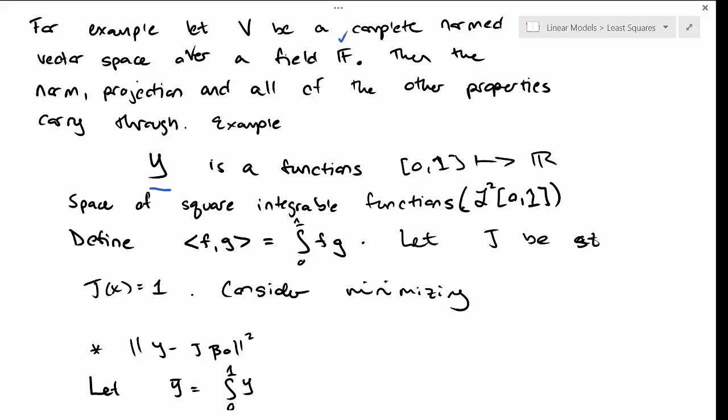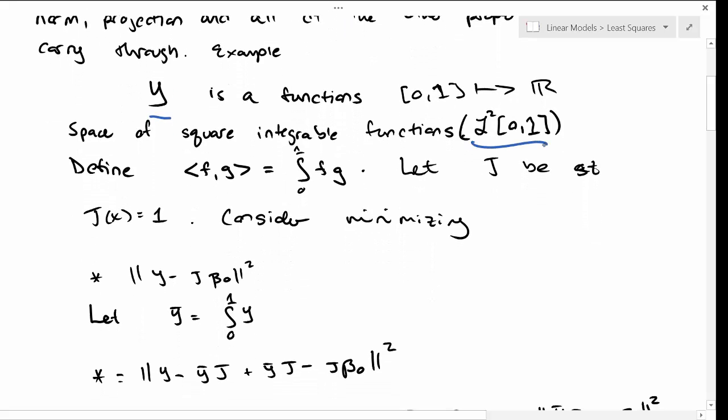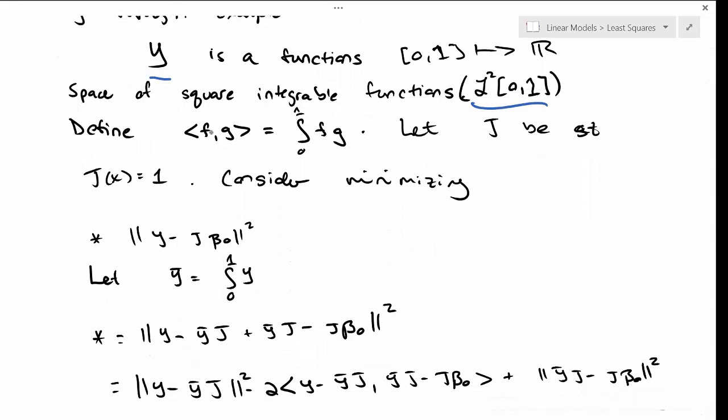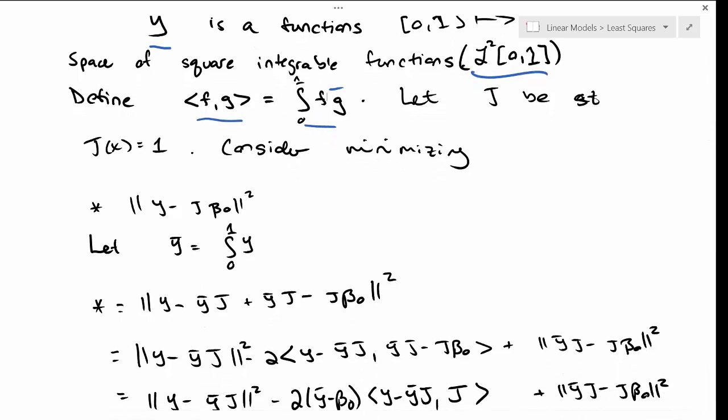So imagine if our vector that we're interested in is a function from [0,1] to R. Let's consider the space of square integrable functions on [0,1], L^2[0,1]. The inner product in that space is the inner product of two functions f and g is just the integral from 0 to 1 of f times g. If the field was complex, we would have a complex conjugate over one of them, but let's stick within the real field right now.